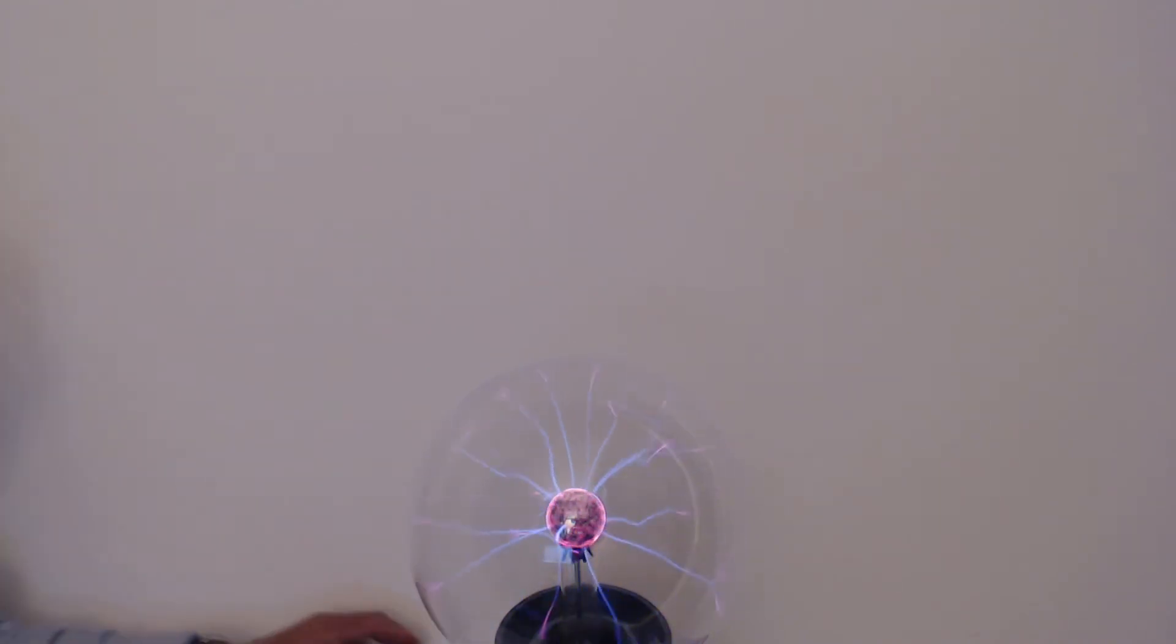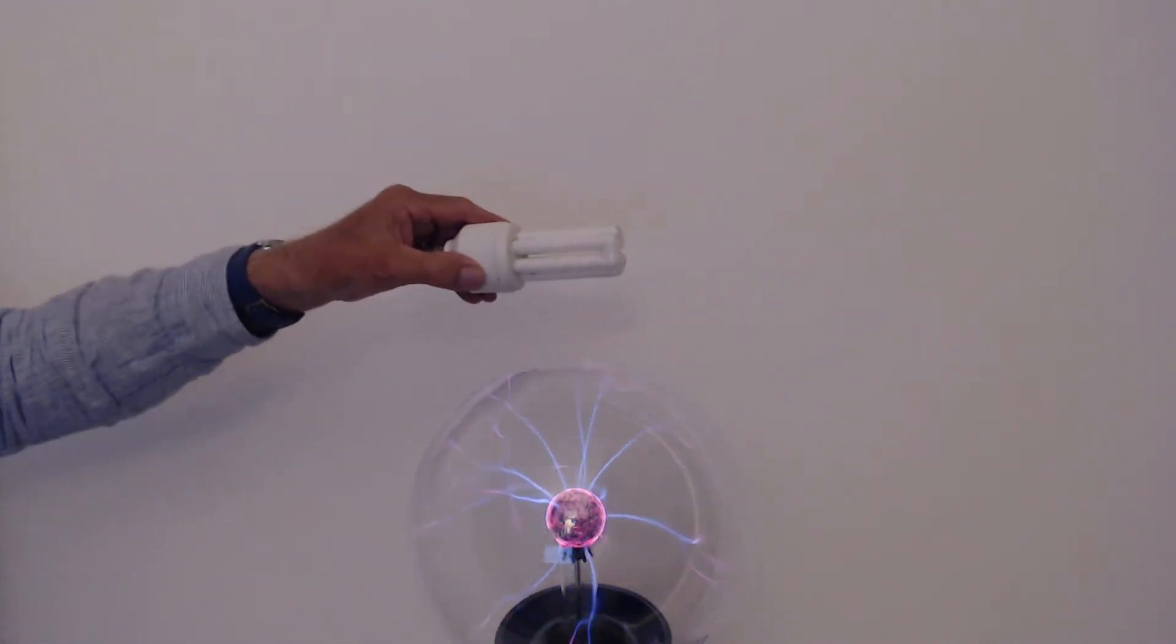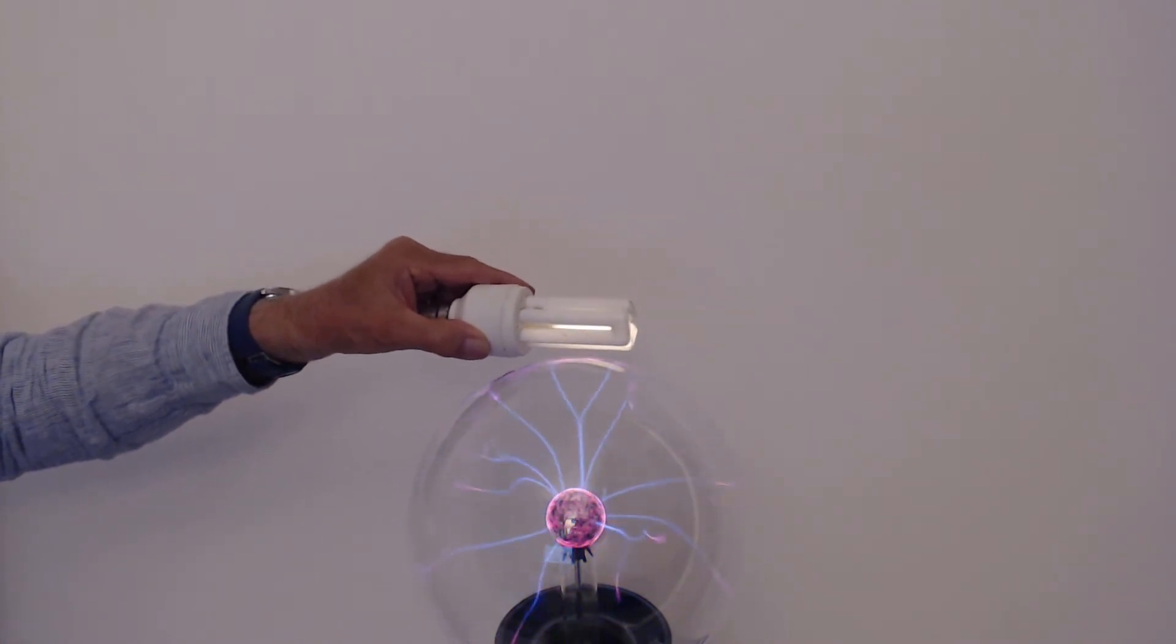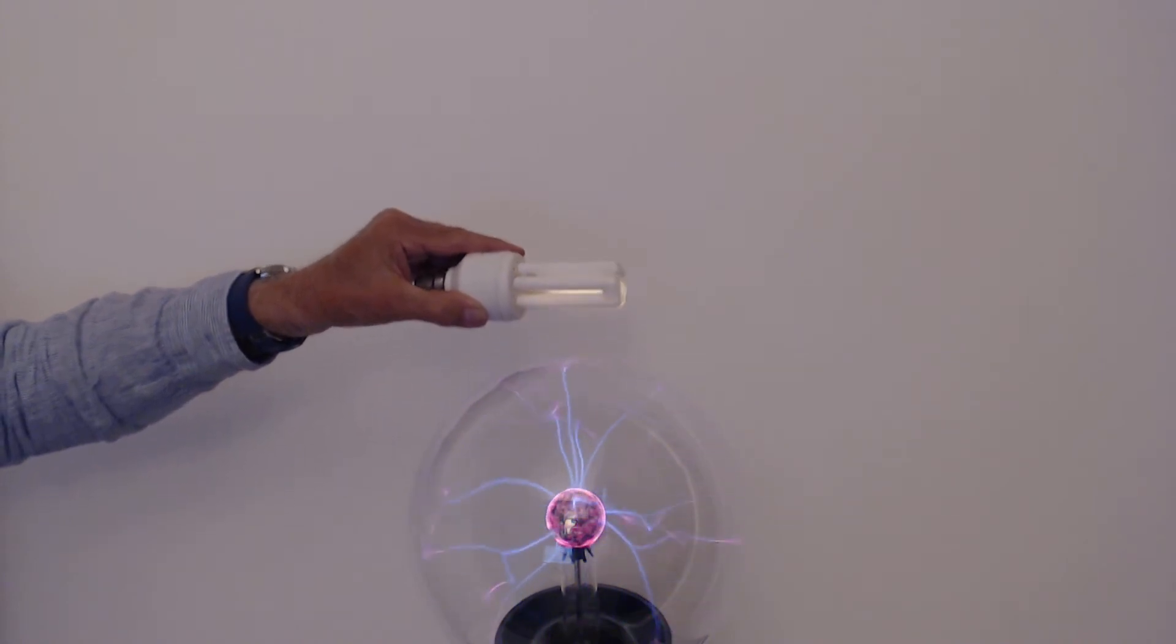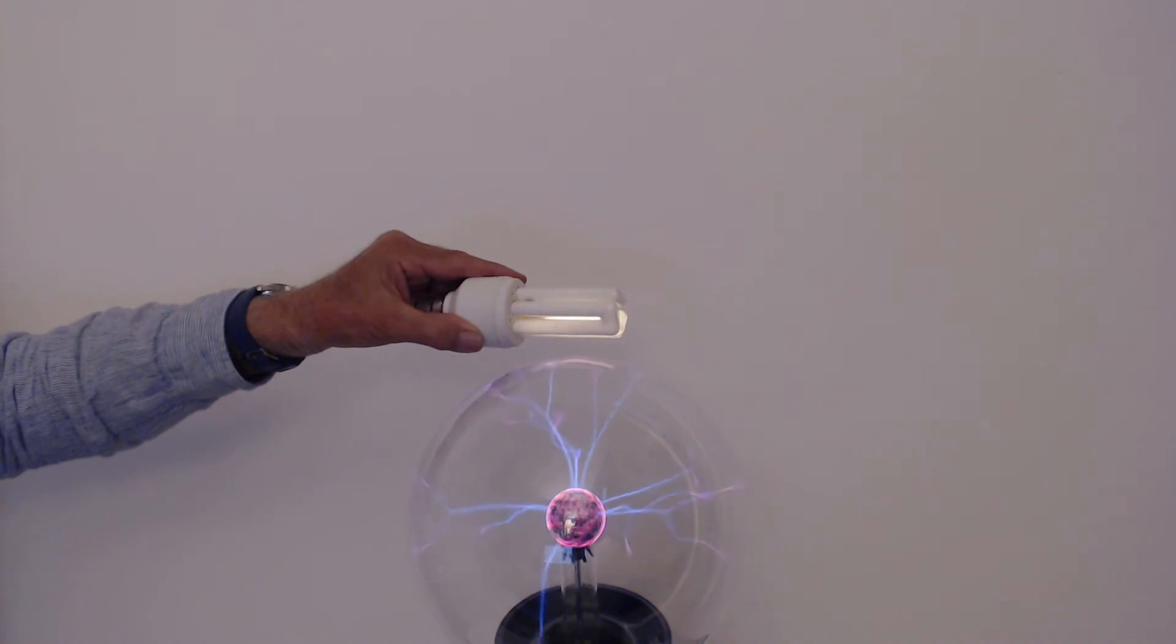Well, let's try a couple of simple experiments. First of all, using a simple fluorescent lamp. Bring it close to the globe, although not touching it, and you see the lamp begins to light. Take it away from the globe, the lamp goes out, bring it back, the lamp comes on again.